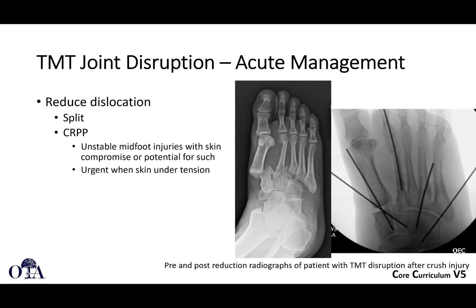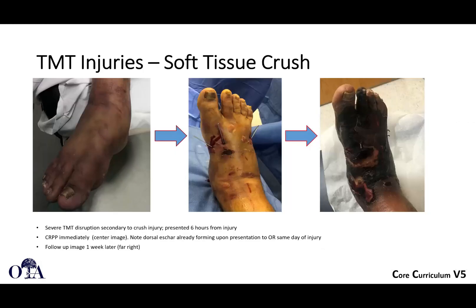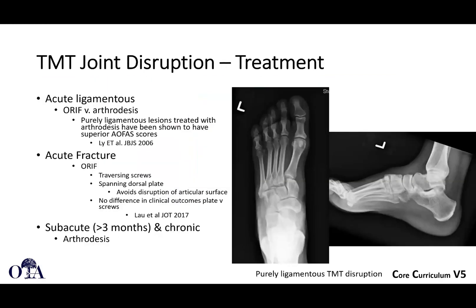If you have severe open injuries and you're not sure where your skin incisions and flaps are going to end up, pinning can be very helpful as well. Here's an example of a patient with severe tarsometatarsal disruption secondary to crush injury, presenting six hours from injury. This patient went to the operating room for closed reduction. Pinning is shown in the middle, and you can already see forming eschars—it would be highly undesirable to open into that. A week later, there is even more extensive skin injury, so this person, if they have a good reduction, could have definitive pinning.